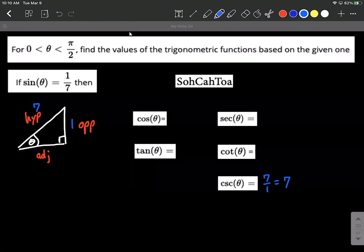Now for the other ones based on SOHCAHTOA, we're going to have to use the adjacent side. Now we don't have the adjacent side yet, but what I like to do is use the Pythagorean theorem, which is a squared plus b squared equals c squared. I'm calling the adjacent side a, so a squared plus 1 squared equals 7 squared.